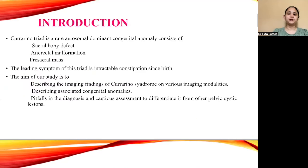Coming to the introduction, Currarino triad is a rare autosomal dominant congenital anomaly which consists of three components: sacral bony defect, anorectal malformation, and pre-sacral mass. The leading symptom of this triad is intractable constipation since birth. The aim of our study is to describe the imaging findings of this syndrome on various imaging modalities, associated congenital anomalies, and pitfalls in diagnosis to differentiate it from other pelvic cystic lesions.